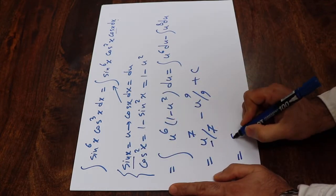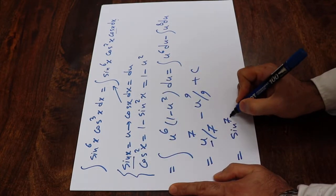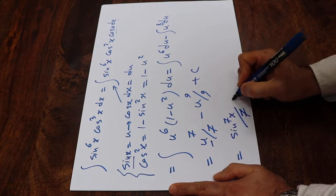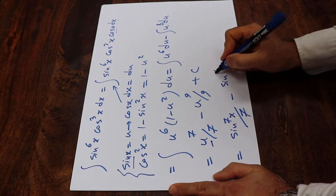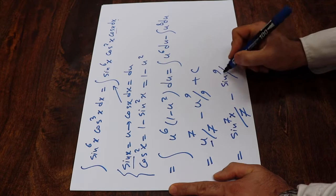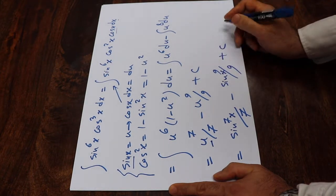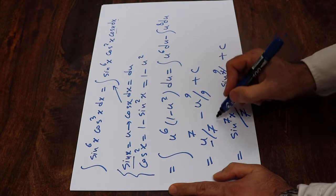Therefore this will be equal to sine with the power of 7x divided by 7 minus sine with the power of 9x divided by 9 plus c, which is the constant of the integral.